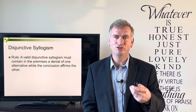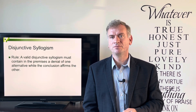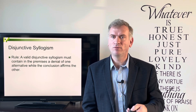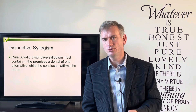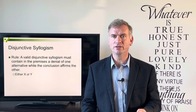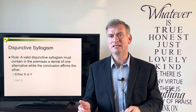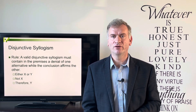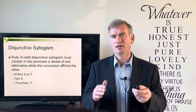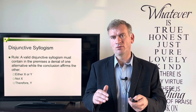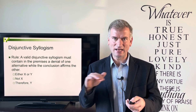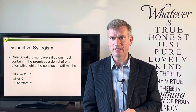The rule for a disjunctive syllogism is that it must contain in the premises a denial of one alternative, while the conclusion affirms the other. So the form is: either X or Y, not X, therefore Y. Make sure you're not saying X, therefore not Y. Make sure the second premise is a denial of one of the options.